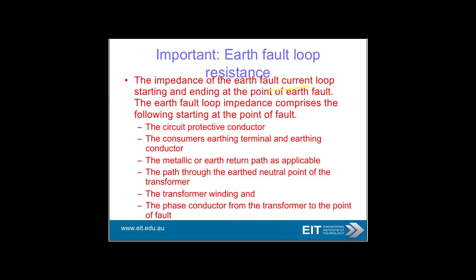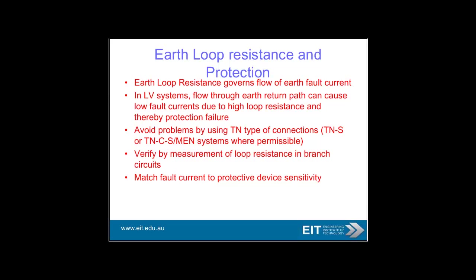The earth fault loop resistance — the impedance of the earth fault loop current — comprises the following, starting at the point of fault: the circuit protective conductor, consumer's earthing terminal, metallic earth return path through the earth's neutral point, transformer winding, and the phase conductor of the transformer to the point of the fault. This determines how much fault current will flow. In low voltage systems, the return path can create low fault currents. Avoid problems by using TN-type connections, and verify by measurement of the loop resistance, matching fault current to the protective device sensitivity.